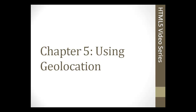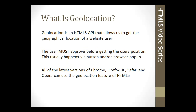Welcome to chapter 5 section 1. In this section we're going to be talking about the geolocation feature of HTML5. The HTML5 geolocation API is used to get the geographical location or position of a user. Many of you have gone to a website — whether it's an e-commerce site or whatever — and had a pop-up in your browser asking if it can get your location. This is most likely an HTML5 website using the geolocation API.